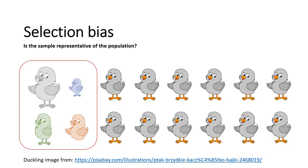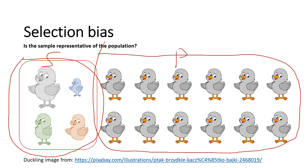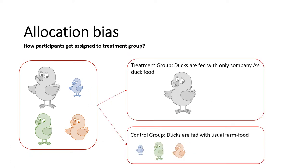The first is selection bias. Imagine a population of gray healthy ducks, and your sample consists of quite different ducks. Selection bias deals with the question: is the sample representative of the population? You have to make sure the sample represents the population well.